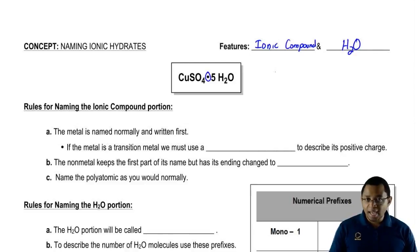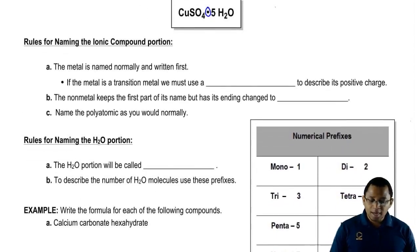The rules for naming the ionic part are the same rules we've been following. The metal is written and named first. If it's a transition metal, remember transition metals have more than one charge so we have to use Roman numerals to describe the particular positive charge that we see. If that ionic compound happens to have just a regular nonmetal, remember that nonmetal keeps its base name and has its ending changed to ide. If that nonmetal portion happens to be a polyatomic ion, we name that polyatomic as we normally would. The rules that we learned for ionic compounds stay the same.